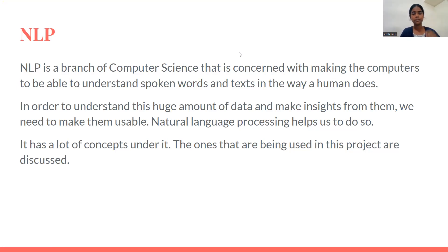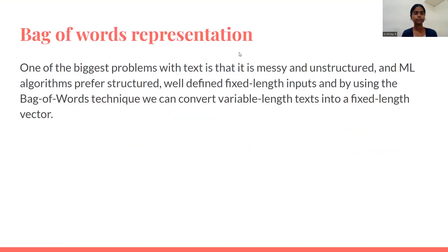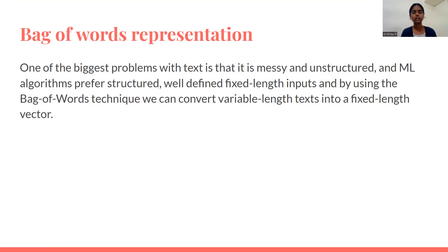There are a lot of concepts under NLP, and the ones we are using in this project will be discussed now. First is Bag of Words representation. One of the biggest problems with text is that it is messy and unstructured. A document can have punctuation, commas, different symbols, and all sorts of things, so a computer or any ML algorithm will not be able to understand it. They prefer well-defined, fixed-length inputs. By using this technique, we can convert all the sentences, which are of different lengths, into a fixed-length vector.